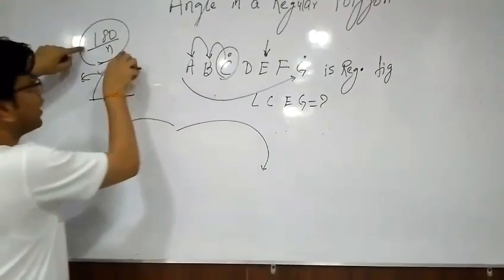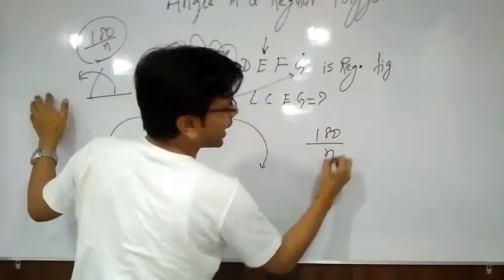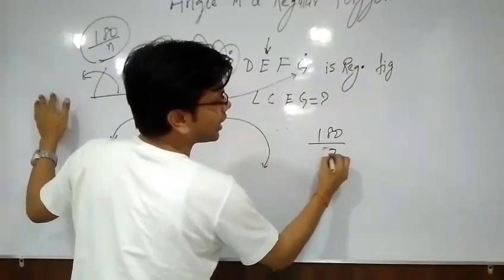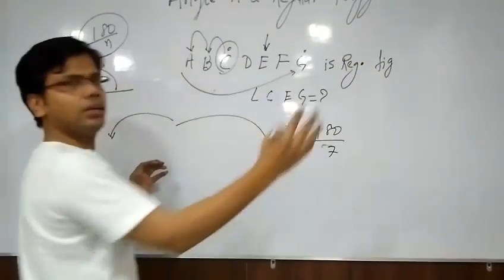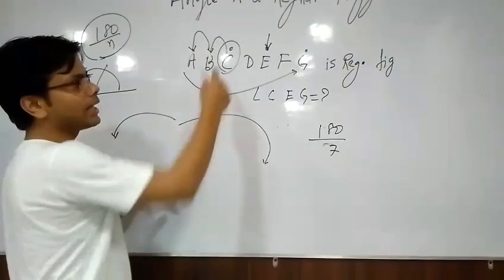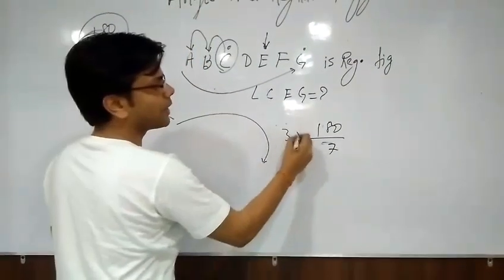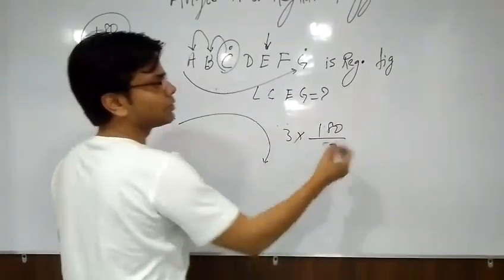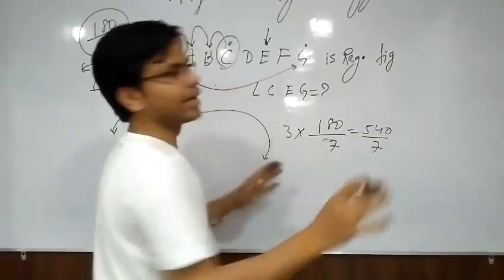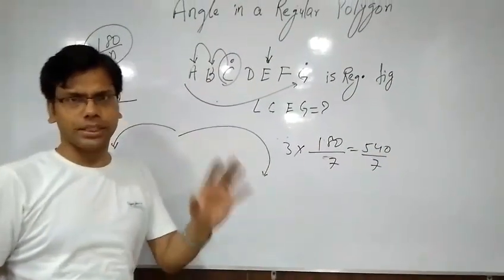We know that one step gives an angle of 180 by n, and here n is nothing but 7. Since we moved 3 steps, the angle is 3 multiplied by 180 by 7 — that is 540 by 7. So 540 by 7 degrees is our angle. I hope it is clear.